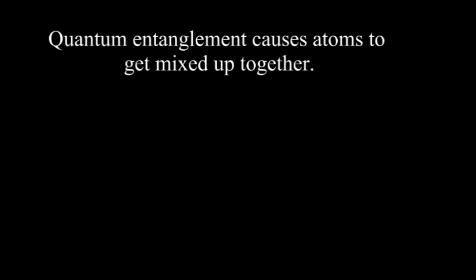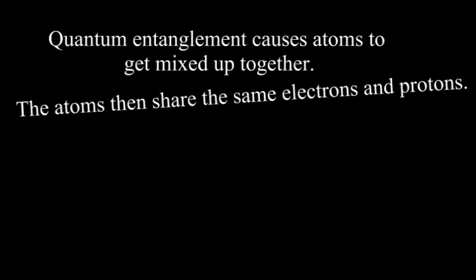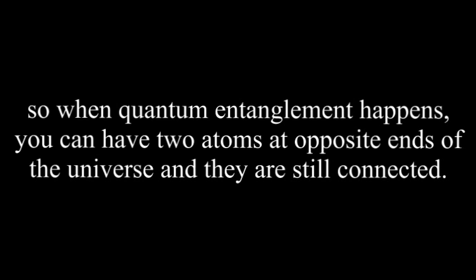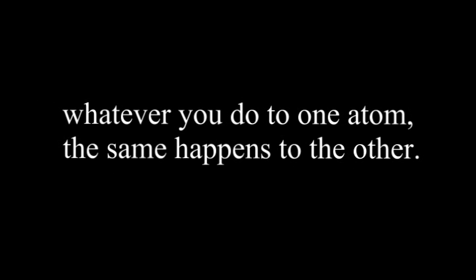Quantum entanglement causes atoms to get mixed up together. The atoms then share the same electrons and protons, so when quantum entanglement happens you can have two atoms at opposite ends of the universe and they're still connected. Whatever you do to one atom, the same happens to the other.